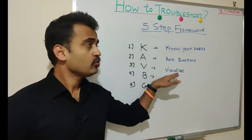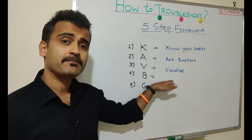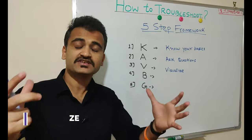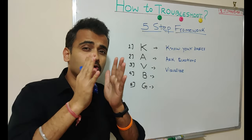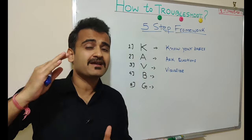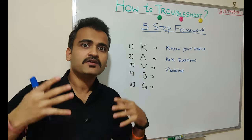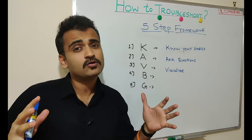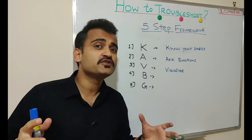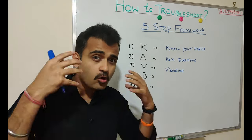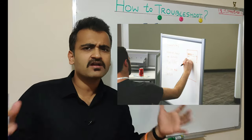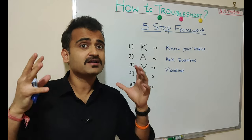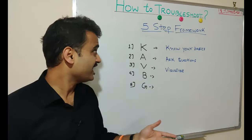After asking valid questions, the third step is to try and visualize the problem. Close your eyes and think in your mind how the whole flow is happening and how this particular error might be occurring. Once you start visualizing the problem it becomes much easier to understand the whole flow and identify the failure points. You can also draw a rough diagram — it gives you a lot of confidence that you are understanding the flow. Knowing your basics and asking valid questions enables you to visualize a problem in a better way.